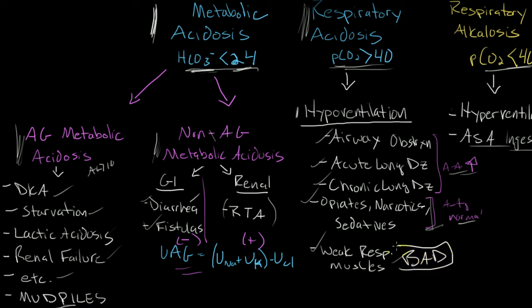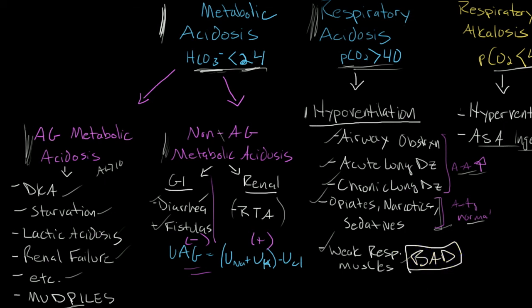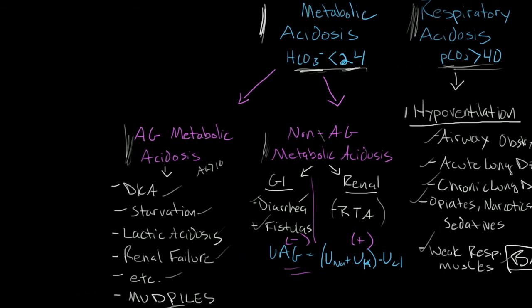Weak respiratory muscles can also cause hypoventilation. If you have someone who's been breathing heavily and finally fatigues, they'll develop respiratory acidosis — and this is a bad sign. These are the types of patients you might have to intubate, so it's important to look out for that. On the metabolic acidosis side, we distinguish between anion gap and non-anion gap. Non-anion gap metabolic acidosis, also known as hyperchloremic metabolic acidosis because your chloride is high, usually has GI or renal causes. GI causes typically involve diarrhea — you're losing bicarbonate — and renal causes usually involve renal tubular acidosis, types 1, 2, and 4.